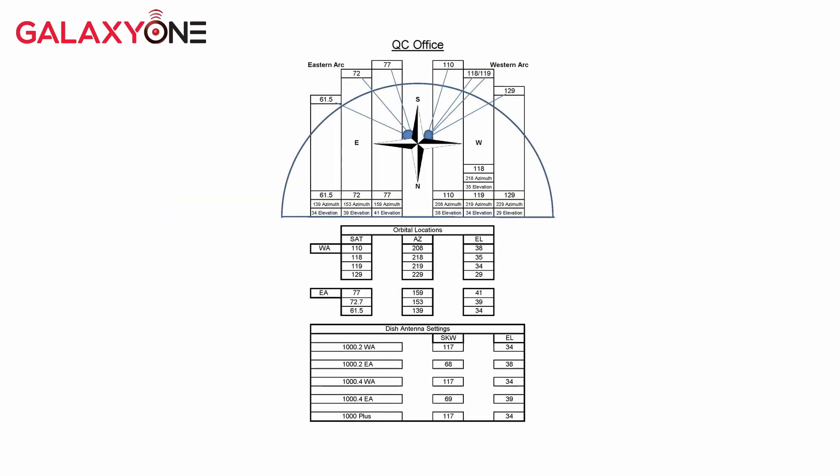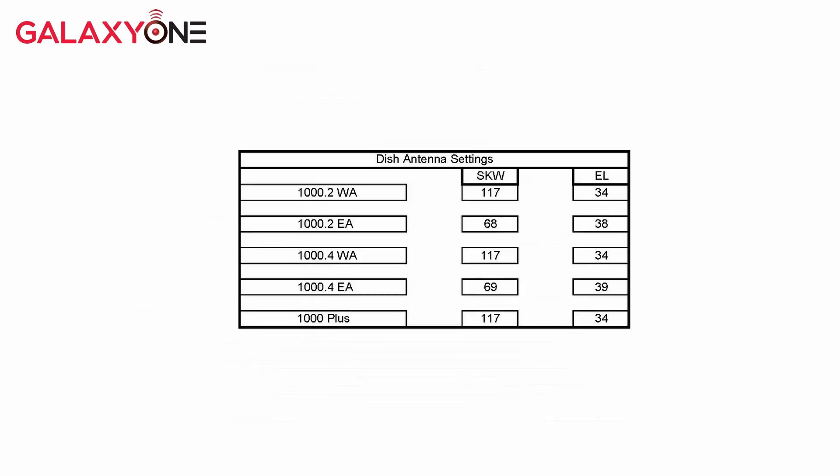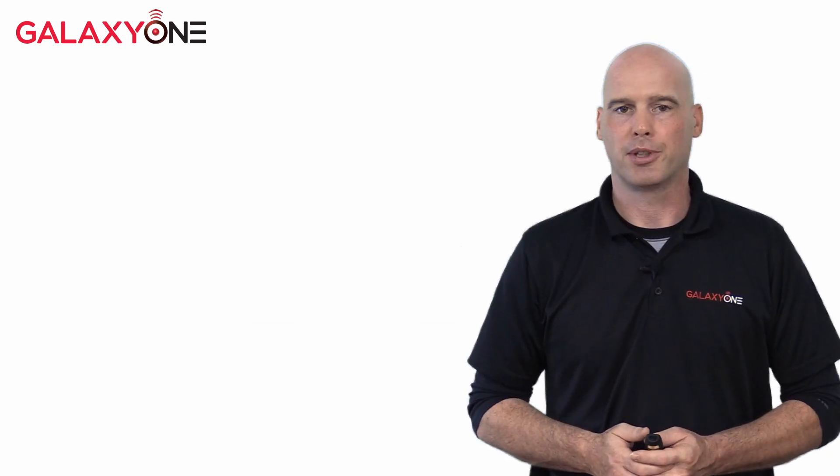Let's take a look at the QC Orbital Location sheet. Locate the 1000.2 Eastern Arc on the antenna settings chart. Now look at the skew column. This tells us the skew setting for the QC area. The skew is the angle the reflector will be tilted.